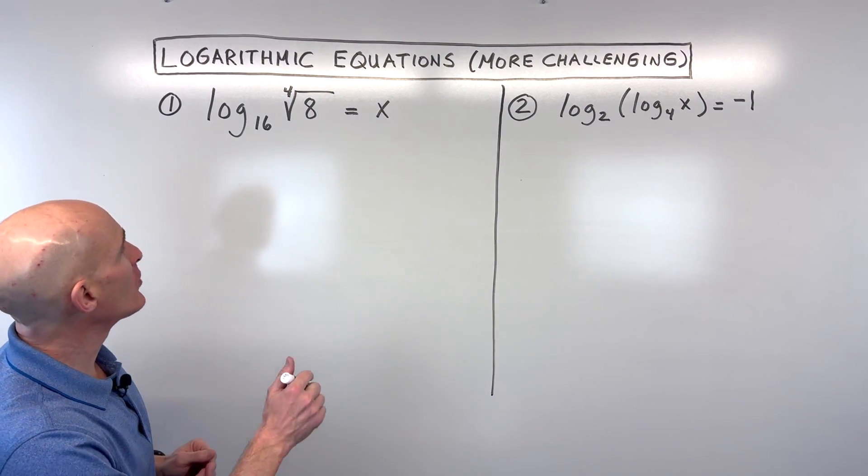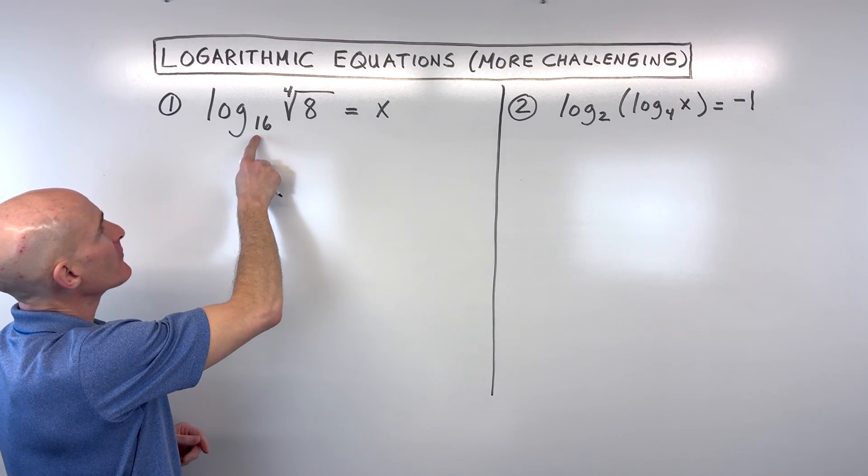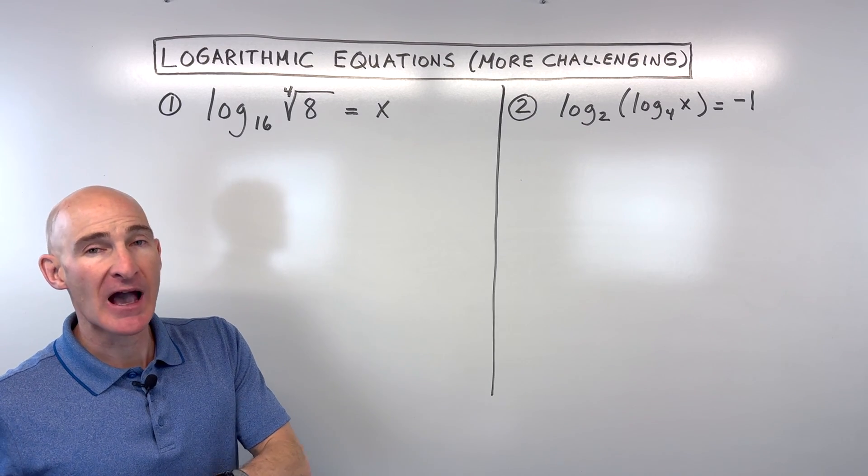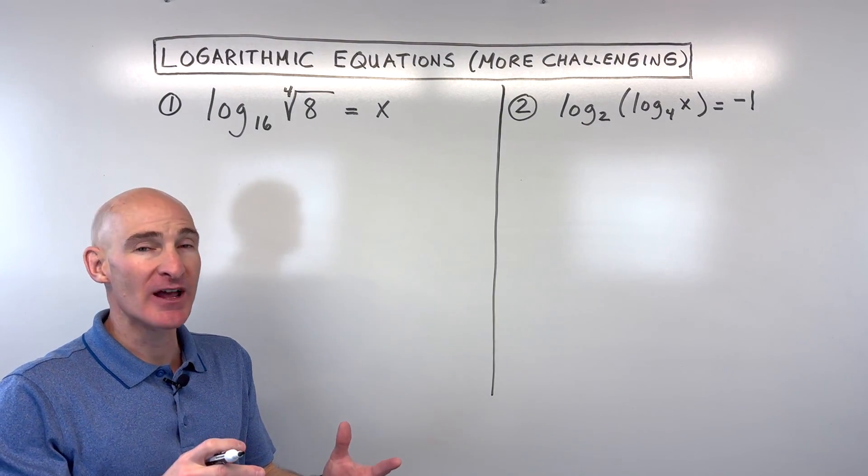So for this first example, what do you think you would do here to solve for x? We can see we've got log base 16 of the fourth root of 8. And the main thing to remember here is how do you switch between the logarithmic form and the exponential form?